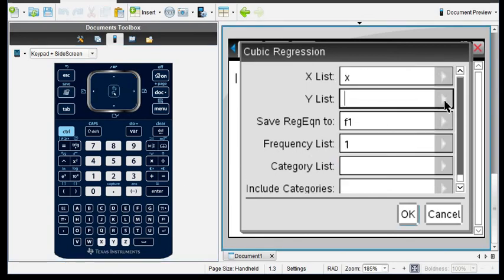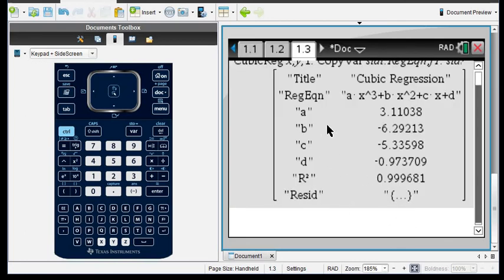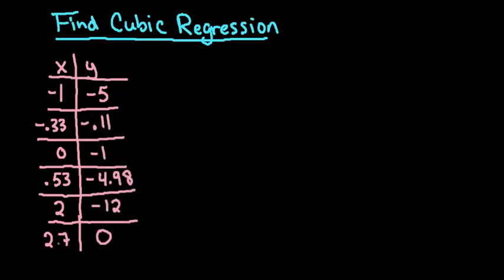Then I can go over here and click Y and okay, and you can see that this will also give me a, b, c, and d to plug into my equation, and then it'll also tell me my r squared. My r squared is 0.99968, which means that 99.97% of our data is explained by this model, which is an extremely strong model.